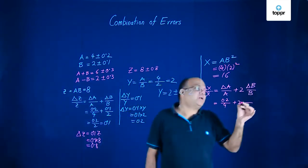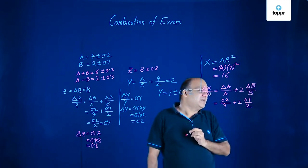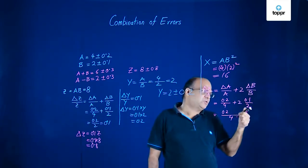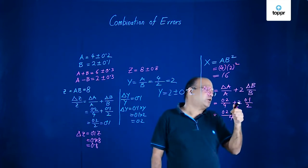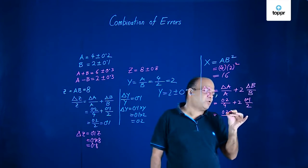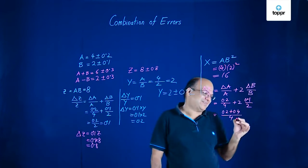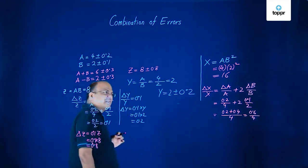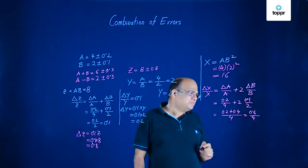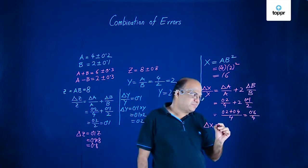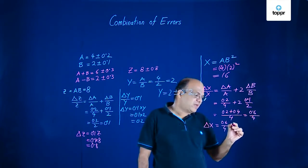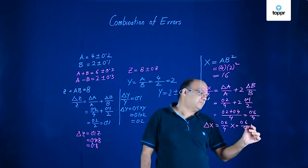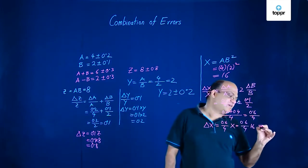Delta X by X will be equal to delta A by A plus 2 times delta B by B. So what is delta A? Delta A is 0.2 and that is out of 4. And this is 2. What is delta B? 0.1 and B is 2. So what I get? We can take 4 as LCM. So this is 0.2. 2 will come here. So we will get 2 into 2, 4. 4 into 0.1 is 0.4. Is that correct? Yes, it is. So 0.6 by 4. This is the fractional error. I can leave it as it is because anyway, I have to multiply by 16. So delta X becomes 0.6 by 4 into X. This is X. So 0.6 by 4 into 16. That will give us 4 here. 4 into 0.6 is 2.4.